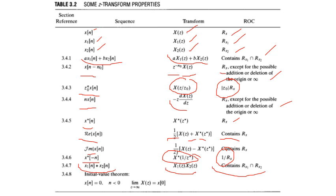The initial value theorem states that if x(n) = 0 for n < 0, then x(0) equals the limit of X(Z) as Z approaches infinity. These are the Z-transform properties — hope you got it. Thank you very much.